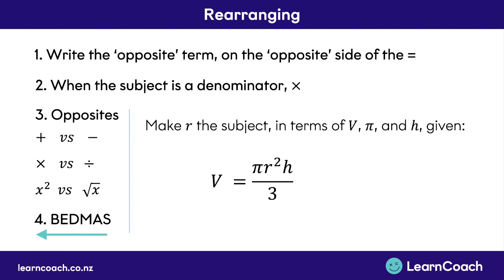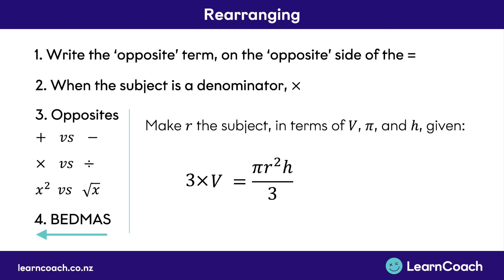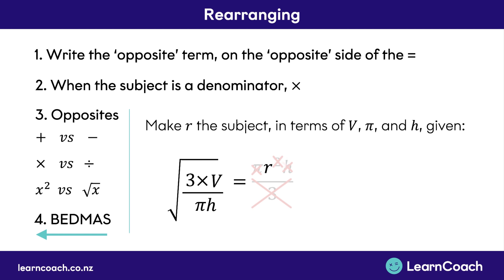Let's go through a couple more examples. Here we want to make r the subject — in terms of v, pi, and h, meaning just leave the letters as they are. The whole right-hand side is divided by 3, so we do times 3 on the opposite side and cross out the divided by 3. Next, we get rid of times pi by dividing the left-hand side by pi. Then we divide by h, the opposite of times h. Finally, we have r squared — the opposite of a squared is a square root — so we write a square root over the whole opposite side. All we're left with is r equals the square root of 3v over pi h.